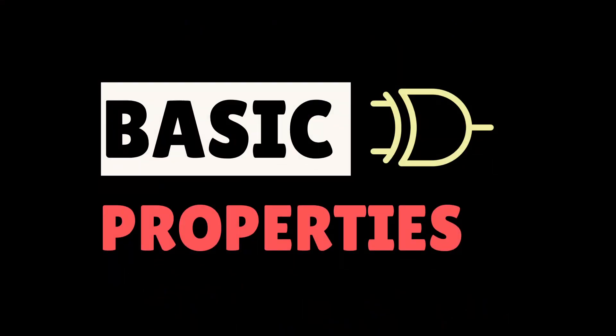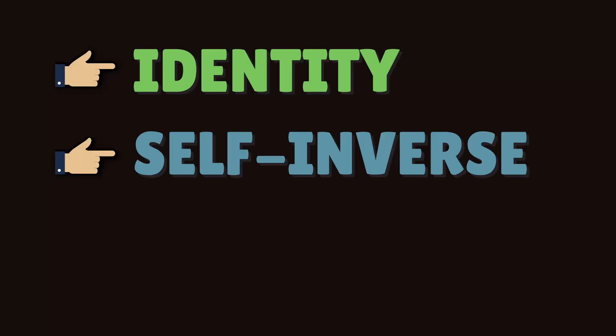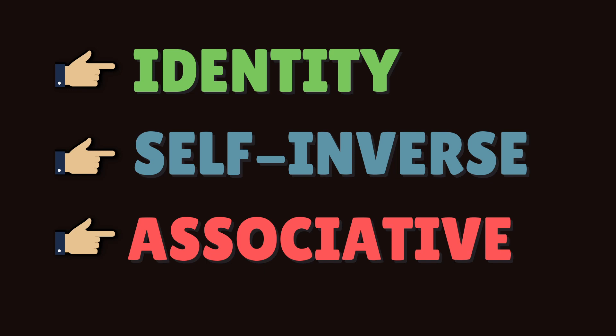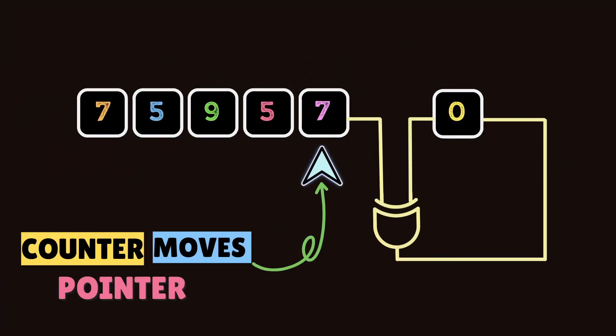So if you have recalled these three properties - identity, self-inverse, and associative - the question can be solved within a minute. We will be using a counter to get the data out from array or SRAM and XOR it, and we will store this value back. This will continue till the end of the elements.